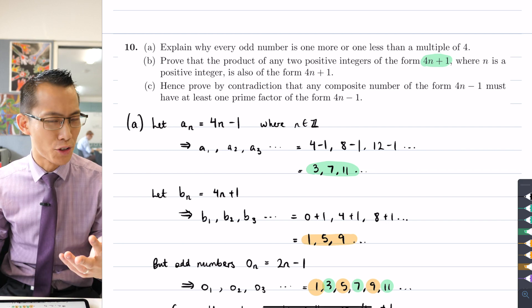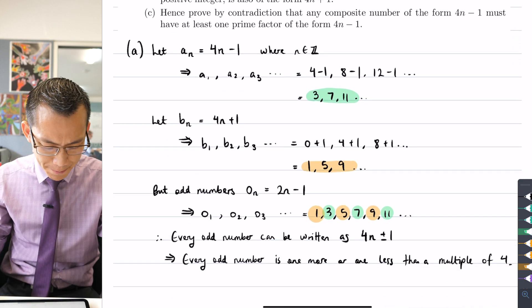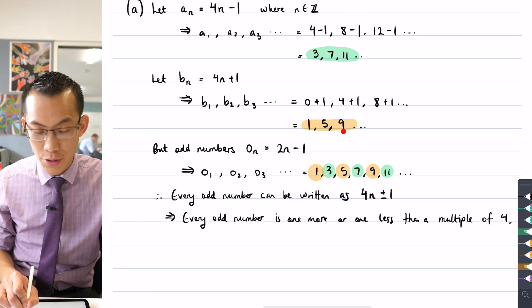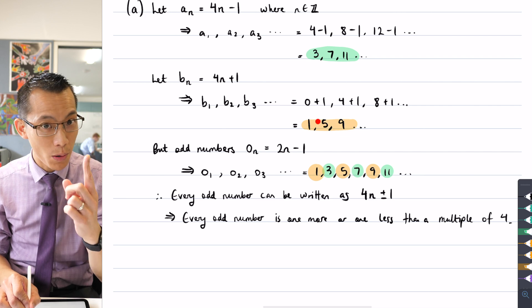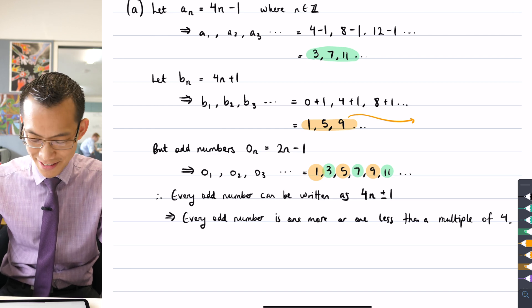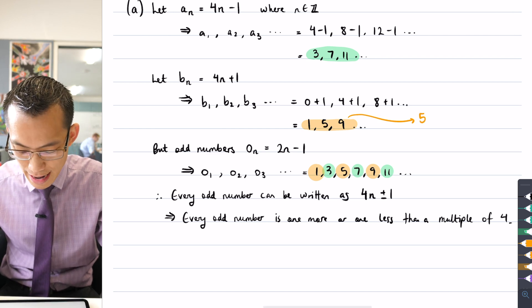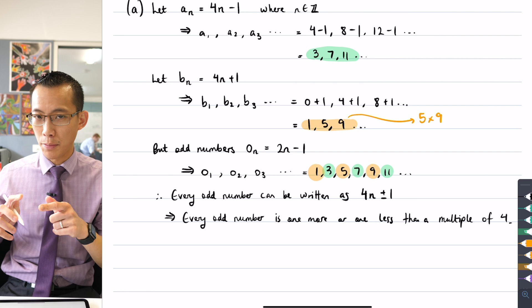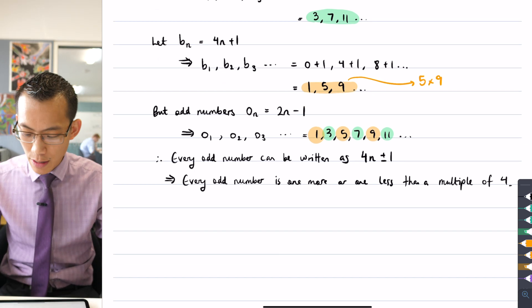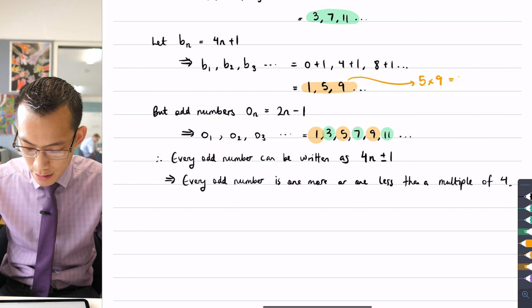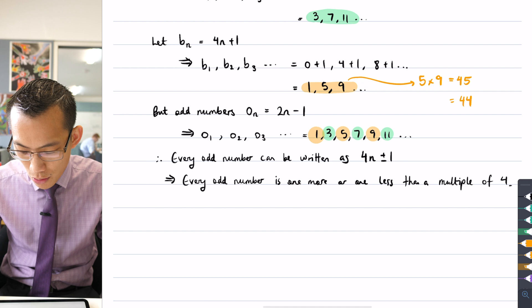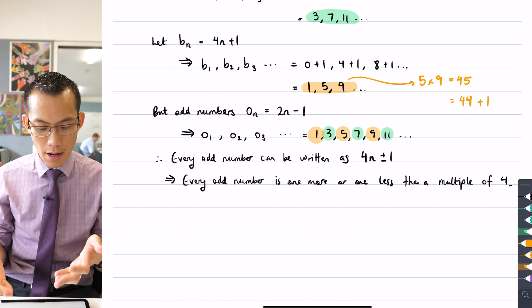So we can quickly verify this right. Here was our sequence here, 1, 5, 9, which has our numbers that are one more than a multiple of four. So if we took, say, I've only got two interesting ones here, if I said, say, five times nine, this is me multiplying two numbers in this 4N plus one format. What do I get? Well, five times nine is 45, and that indeed is one more than a multiple of four.